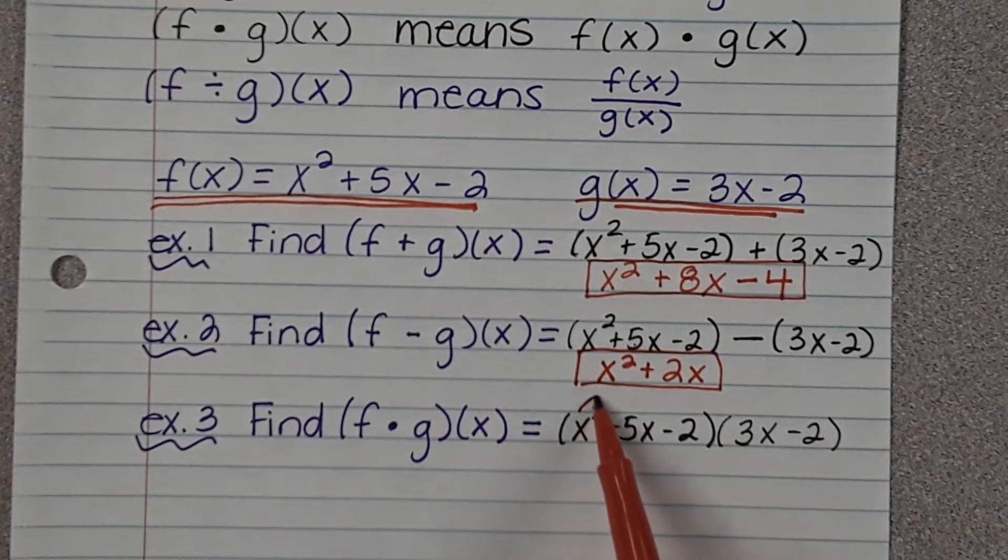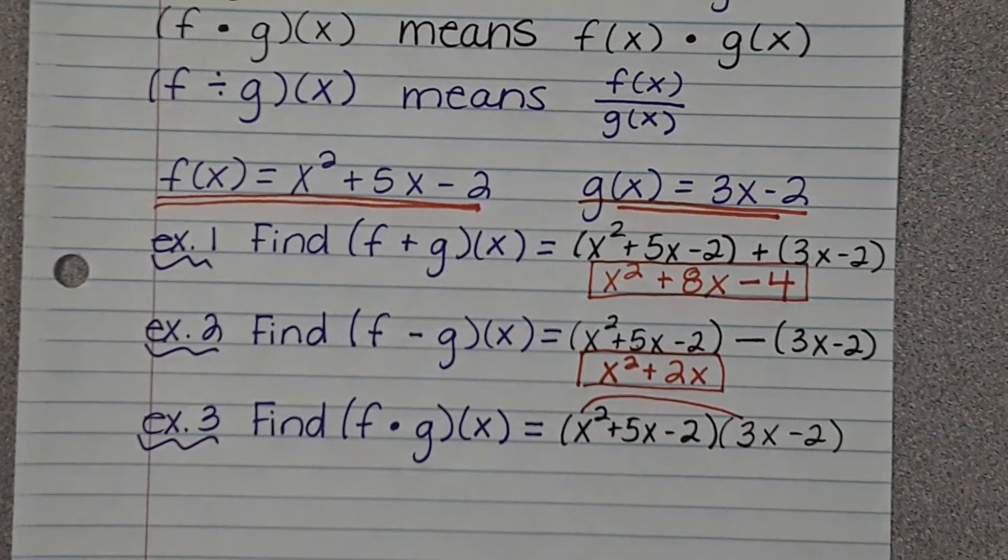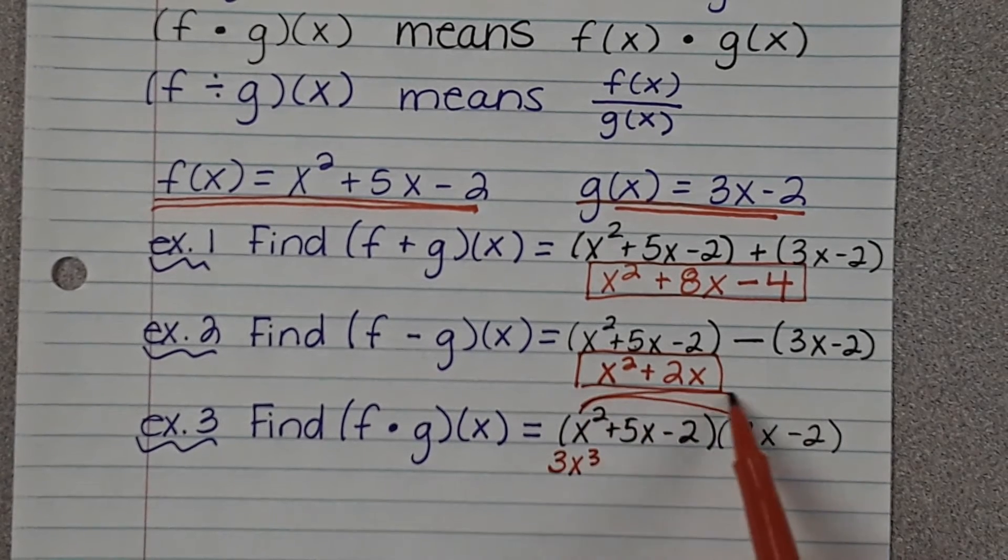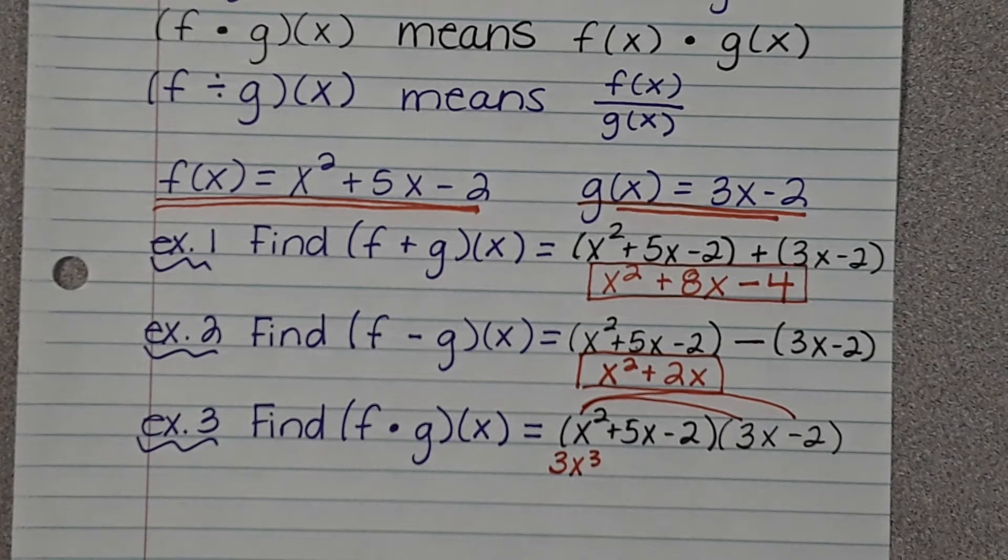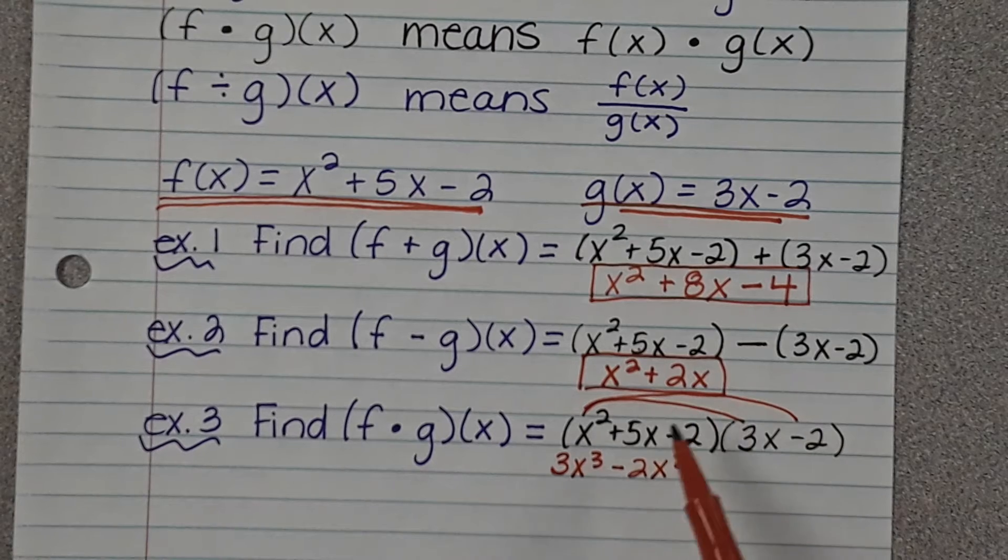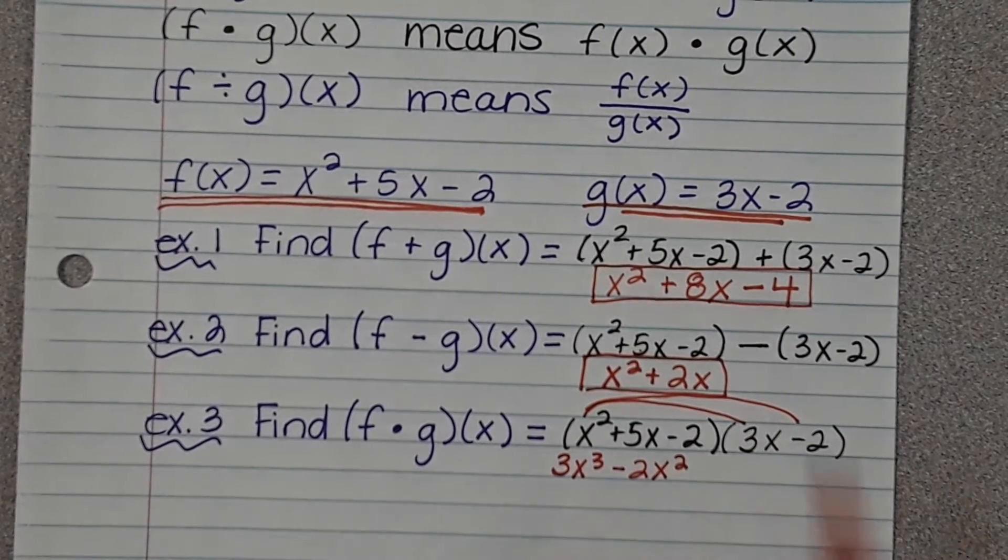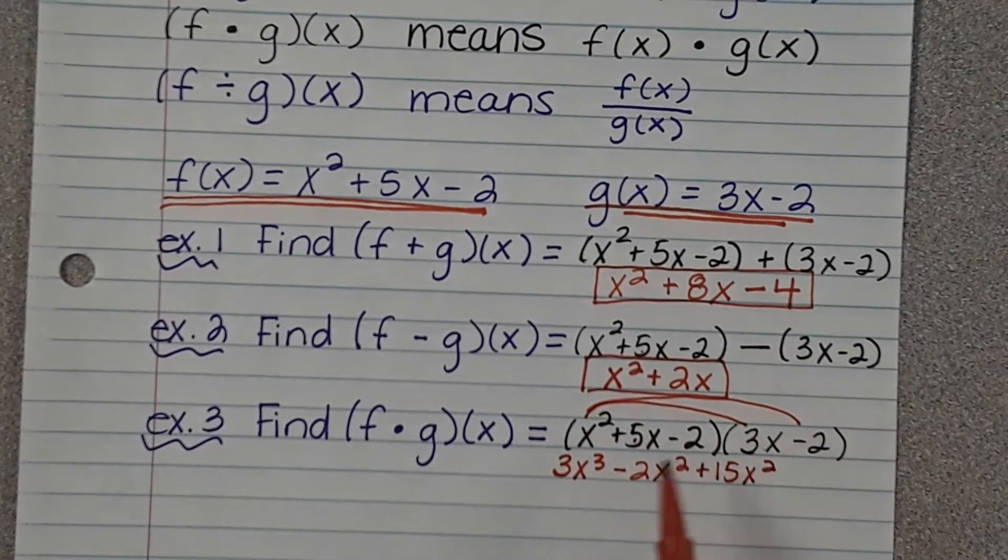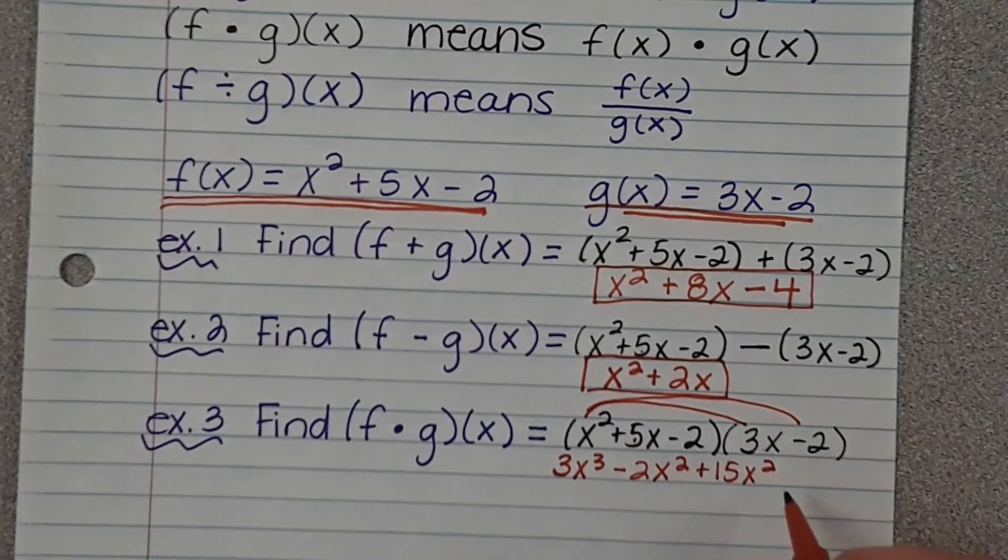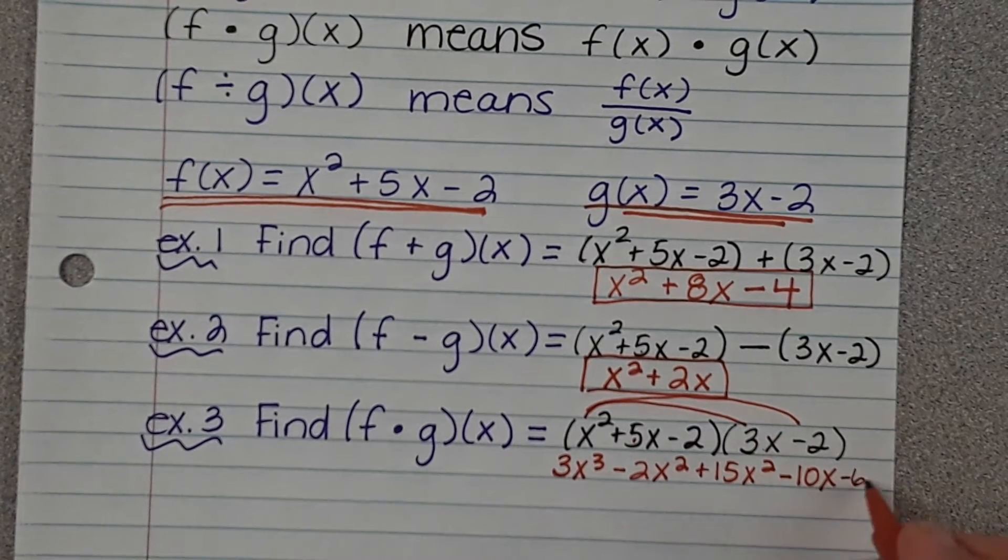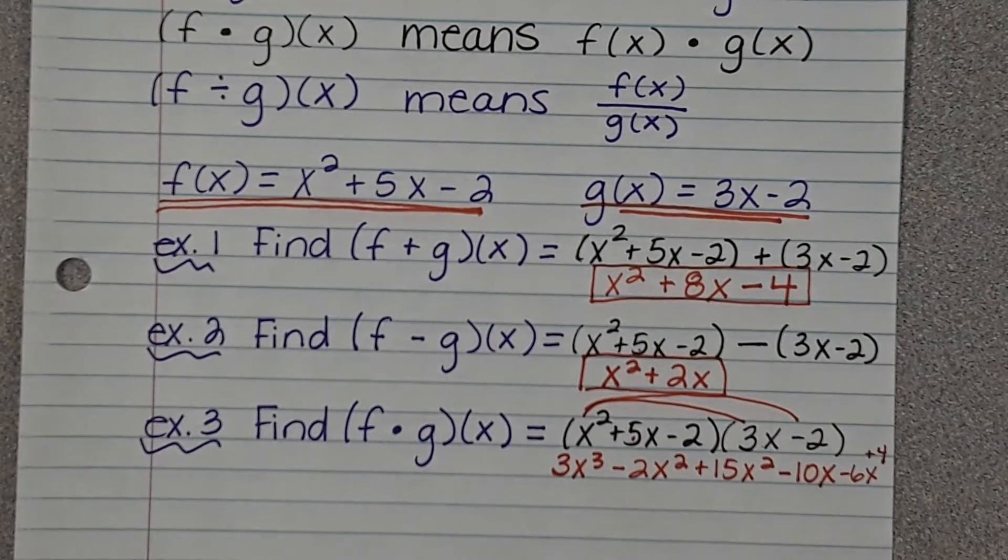So we did this in the last unit, where we're actually going to multiply. So we're going to do x² times 3x. What is x² times 3x? 3x³. I'm going to do x² times negative 2. So what is x² times negative 2? Negative 2x². Now we're going to do 5x times 3x, which is 15x². I'm going to do 5x times negative 2, which is negative 10x. Negative 2 times 3x is negative 6x. And negative 2 times negative 2 is positive 4. And now we need to combine like terms.